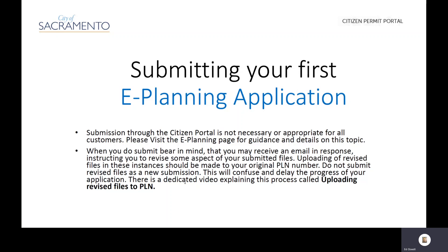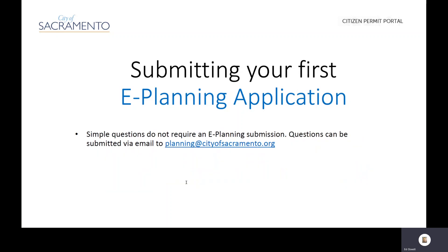There is a dedicated video explaining this process called Uploading Revised Files to PLN. Simple questions for the Planning Division do not require a full submission through the Citizen Permit Portal — they can be emailed to planning@cityofsacramento.org.